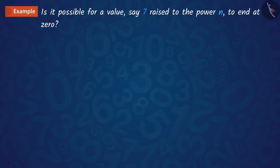Check whether there is any value of n for which 7 raised to the power n ends with digit 0. We know that if a number ends with 0, it will be divisible by 10.